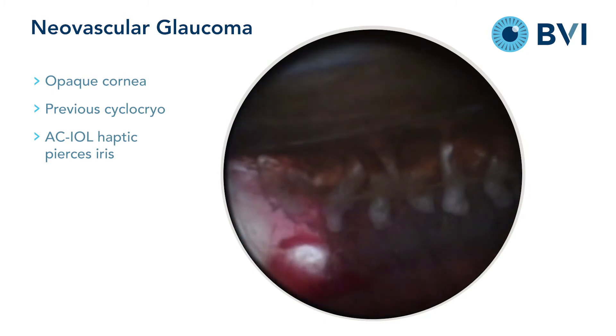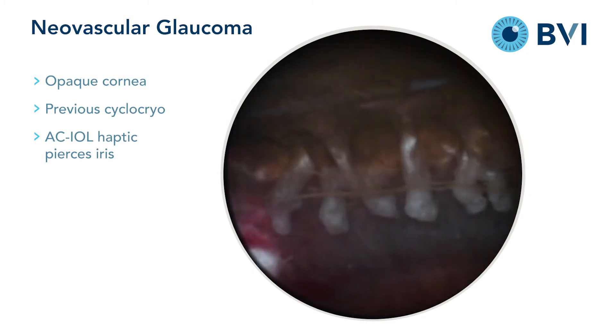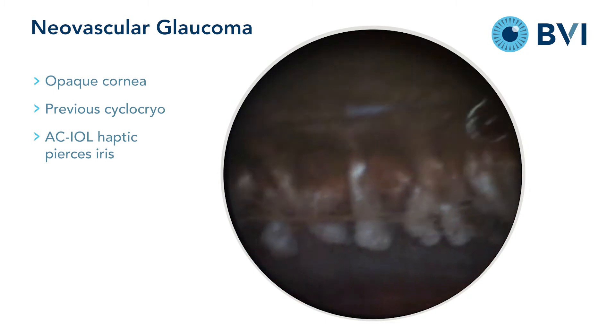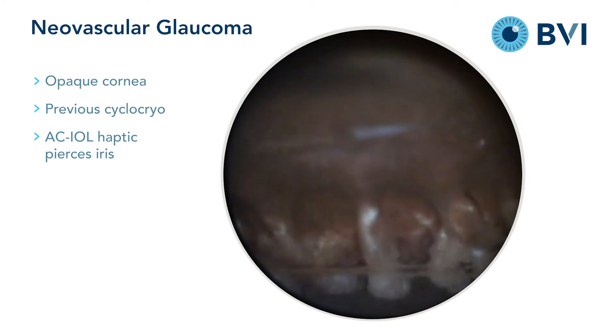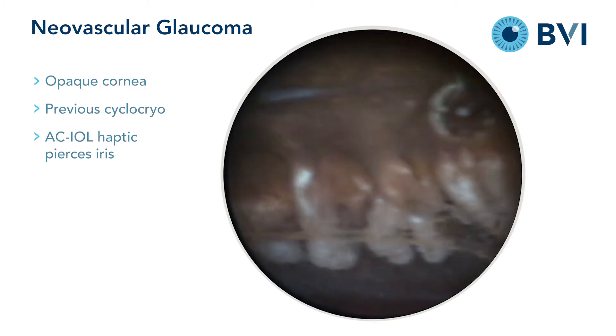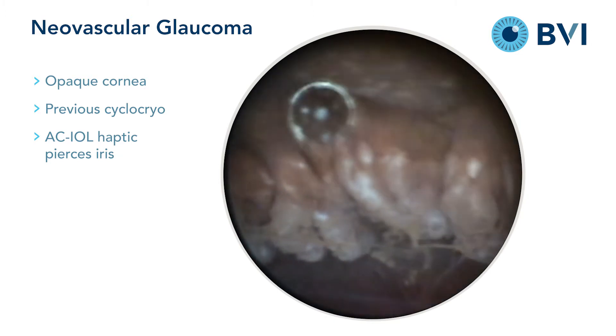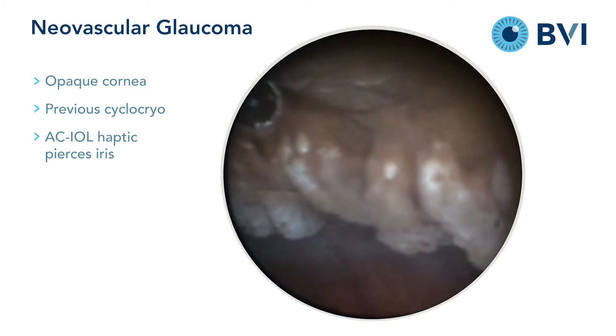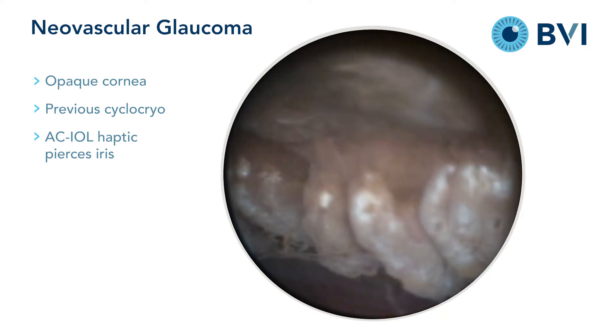The brown ciliary processes or portions of them are viable and still produce aqueous. Those are the targets for ECP.